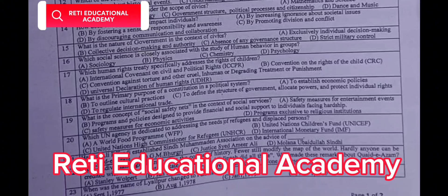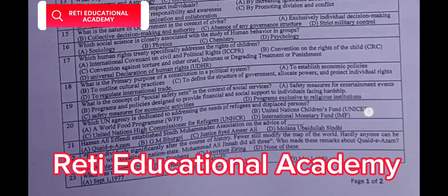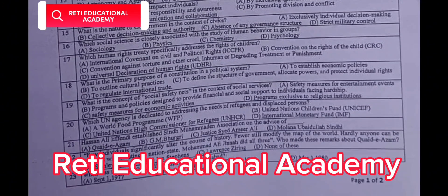Question number 16: Which social science is closely associated with the study of human behaviour in groups? A. Sociology. B. Physics. C. Chemistry. D. Psychology. The correct answer is D: Psychology.